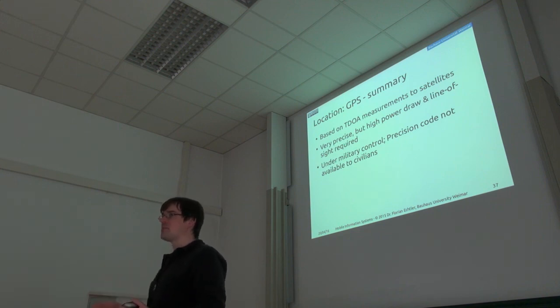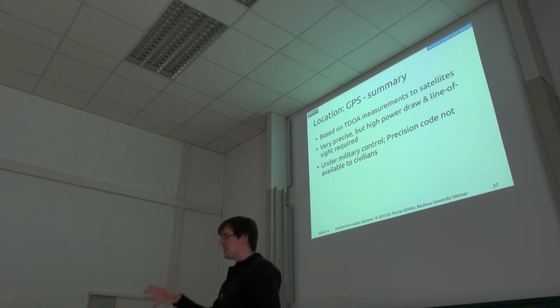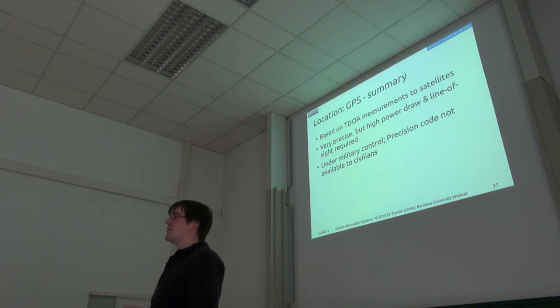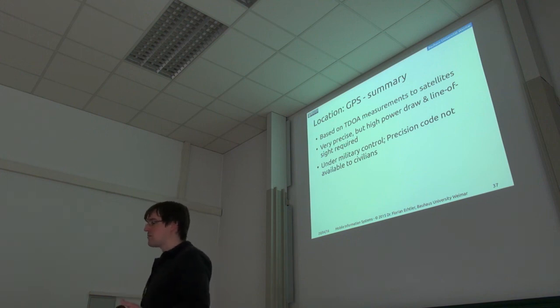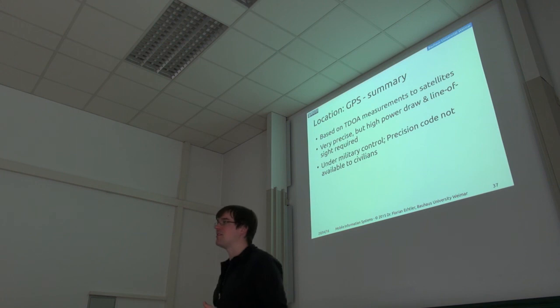And I assume that nobody has seen the need. So I think there are some special applications where you can have basically an additional stationary satellite on the ground which transmits a similar signal as GPS and which can then be used to improve the accuracy. But again, it's just too expensive, I guess. So it would be possible to put that into base stations, but then they would cost maybe ten times what they cost now.